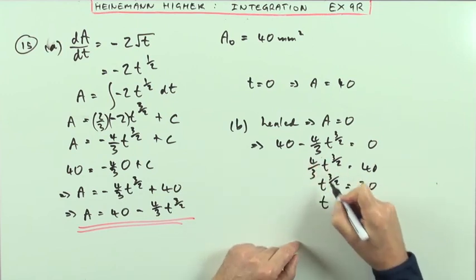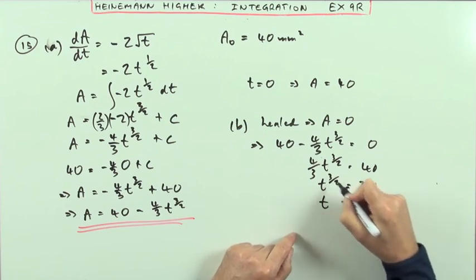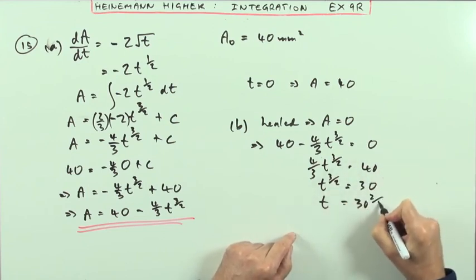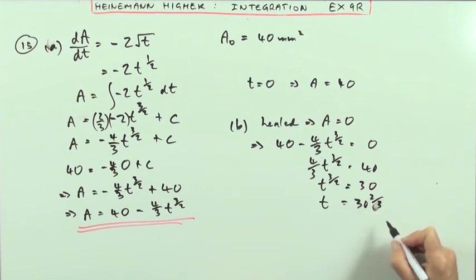And then finally, getting rid of the powers and roots, it'll be 30^(2/3). Well, that would be its accurate value. I would have 30 squared, the cube root of 30 squared.